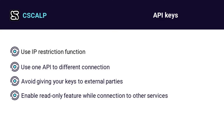API keys have customization options. For example, you can configure keys so that they can only receive exchange information — read-only keys — and transactions will be prohibited. Use separate API keys for each service; for example, one pair of API keys for CSCalp, another for Trader's Diary, and so on. Delete keys that you no longer need, and access to the account through them will immediately disappear.